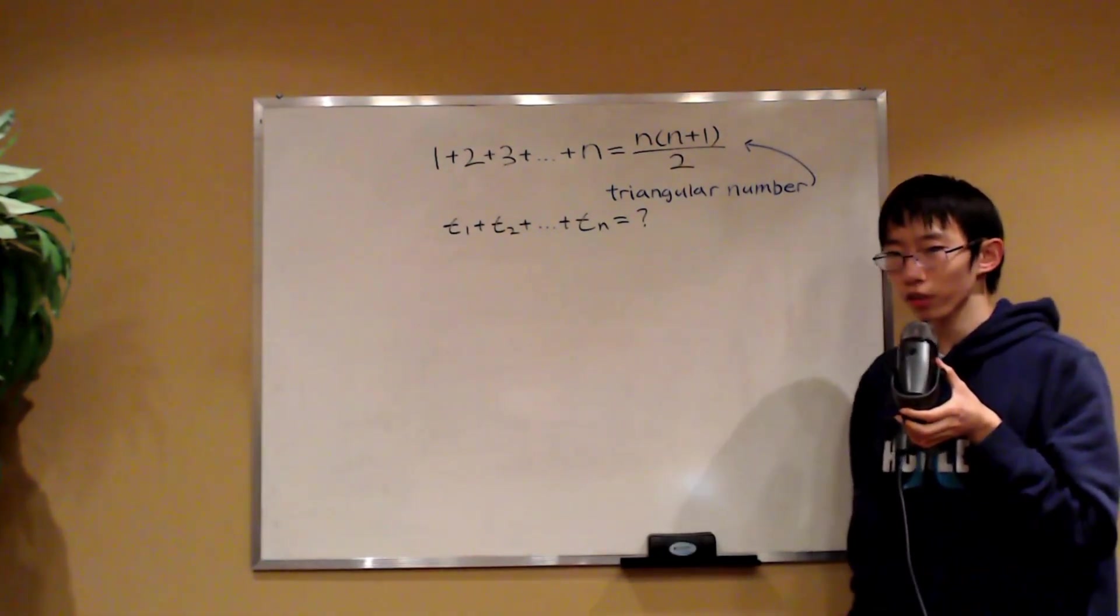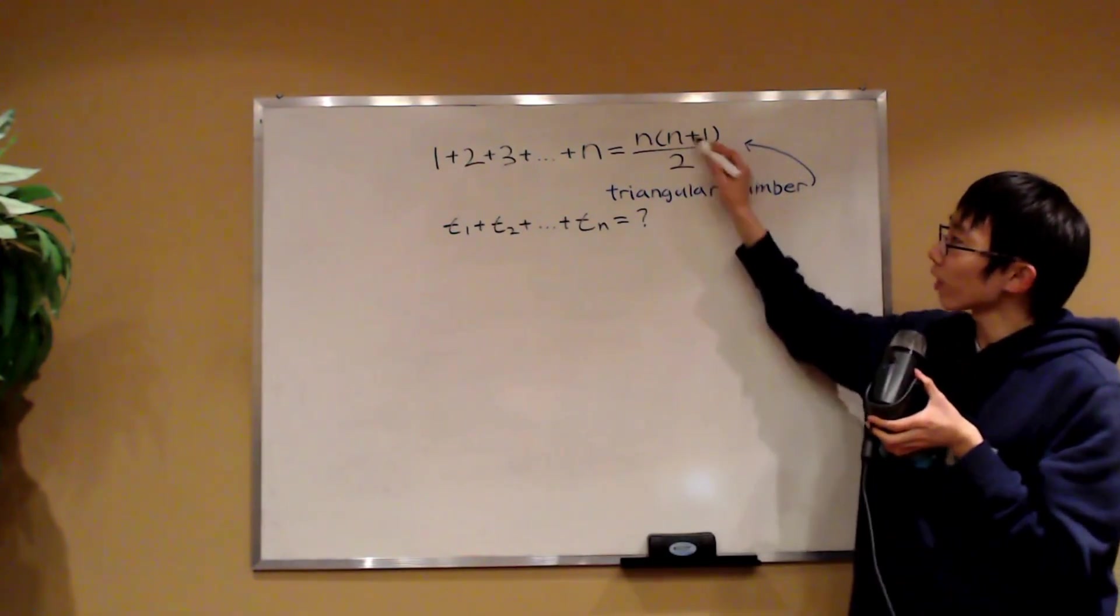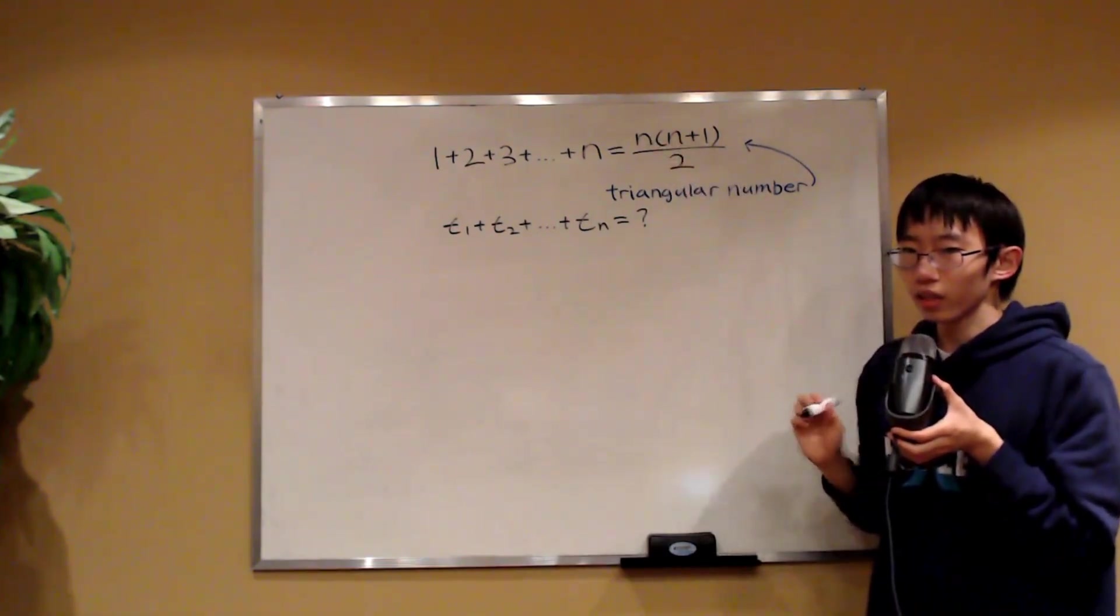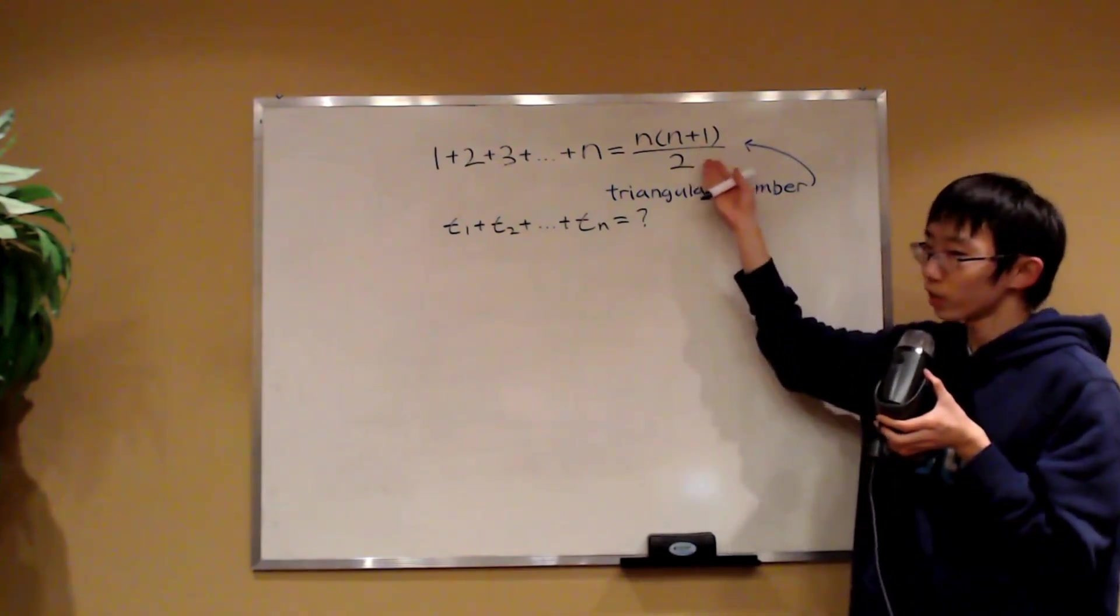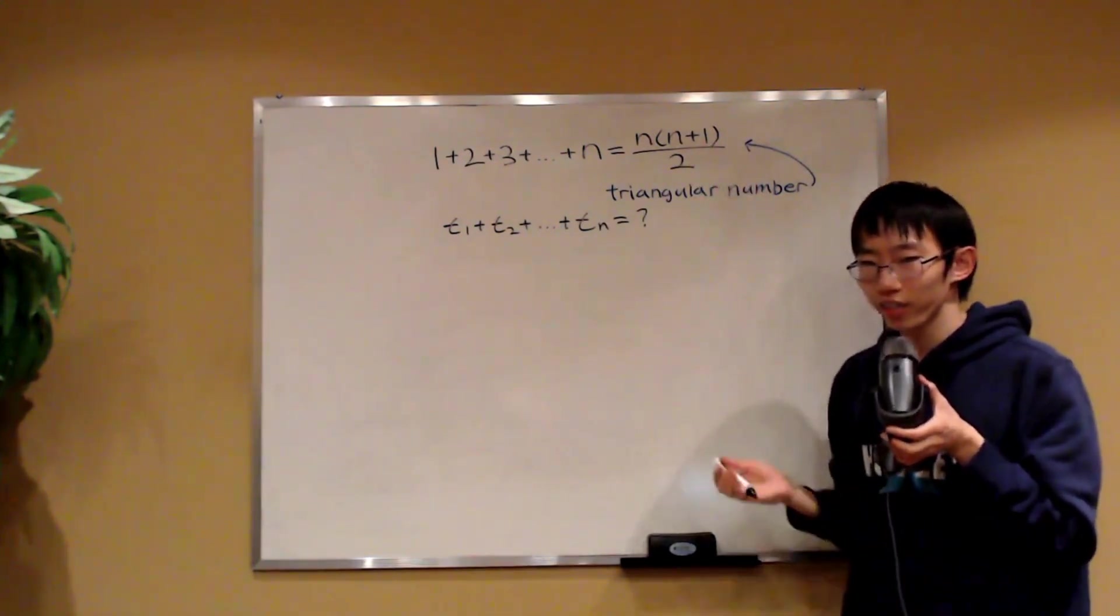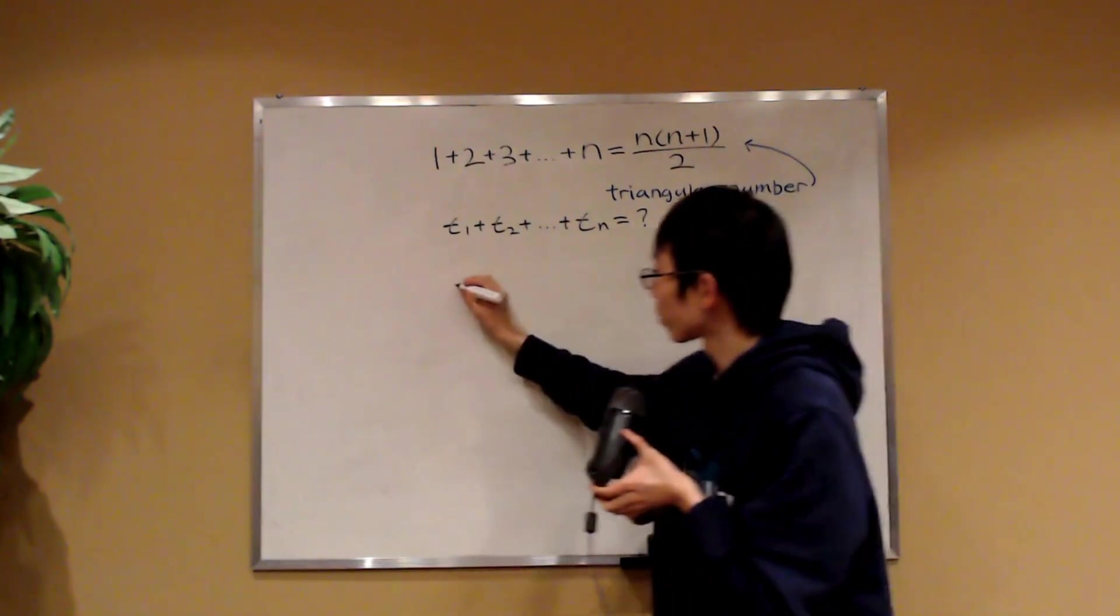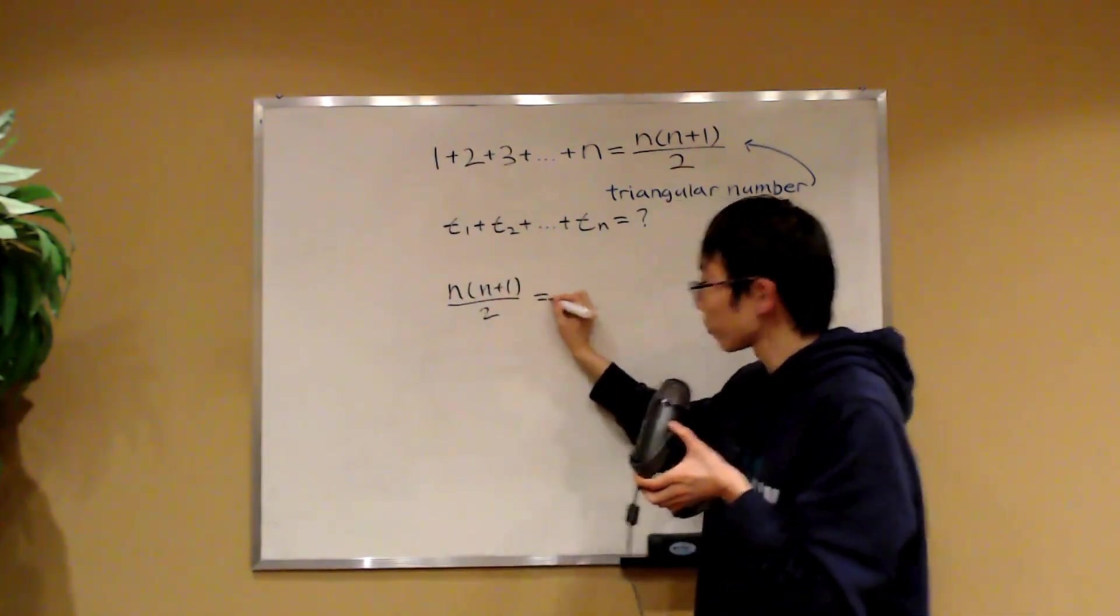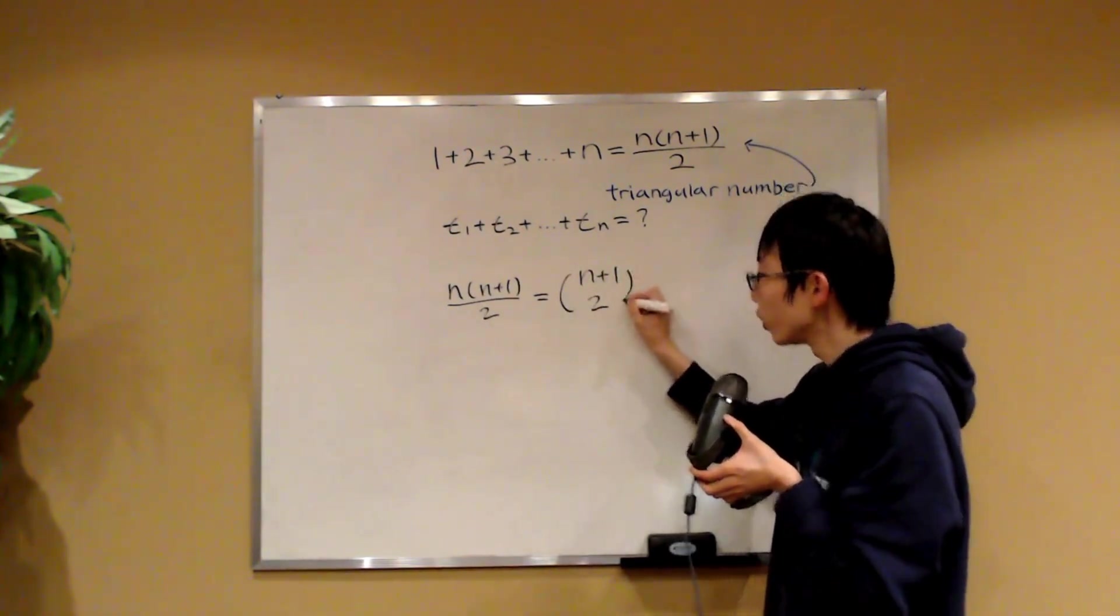Well, first observe the formula for the nth triangular number. Here we have n plus 1, and that's obviously 1 more than n. Now, if you're really familiar with combinatorics, you may recognize that this can be written as a binomial coefficient. That is, n times n plus 1 divided by 2 can be written as n plus 1 choose 2.